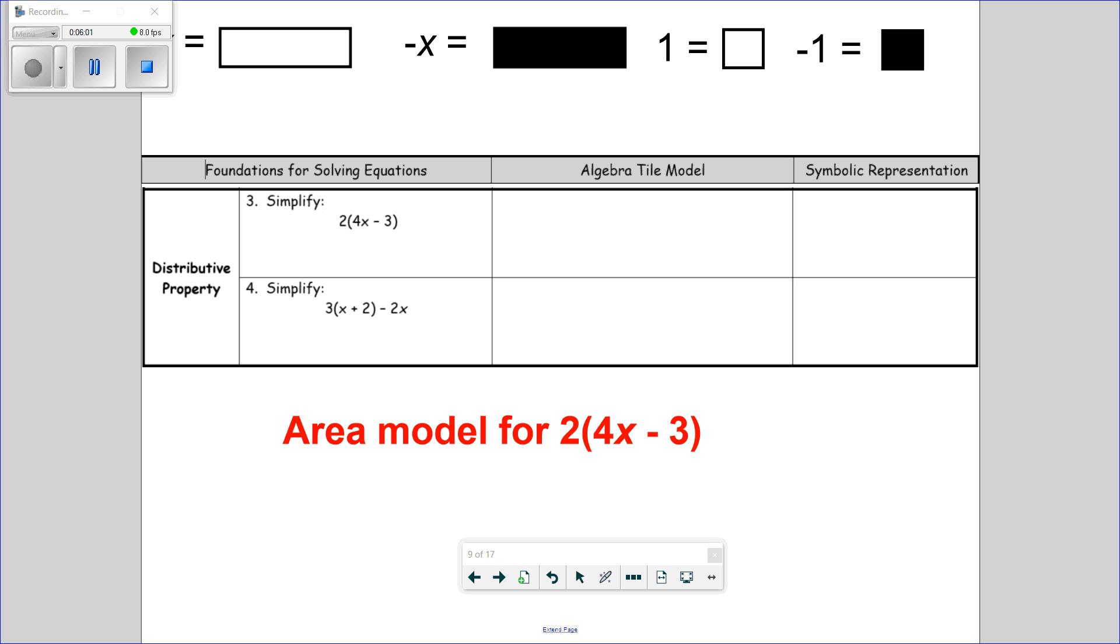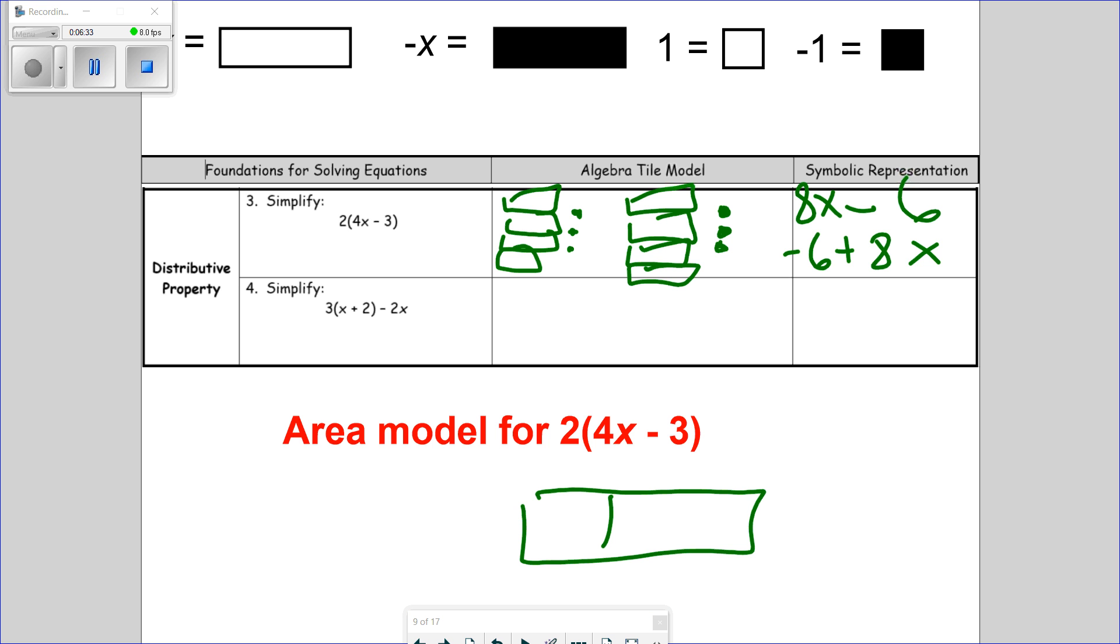And the last one. And here, using the algebra tile model, two groups of 4x minus 3. So, 4x minus 3. But I need two groups. 4x minus 3. So, I see 8x minus 6. Or negative 6 plus 8x. What if I do not like the algebra tile model? Could I have done it in the area model? So, two groups, 4x minus 3. How would you find the area of this rectangle? You do 2 times 4x is 8x. How would I find the area of this? 2 times negative 3 is negative 6. 8x minus 6. Same answer.